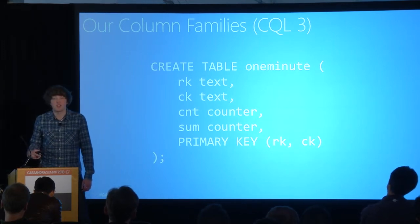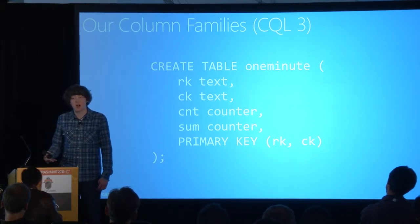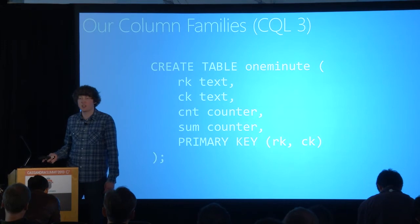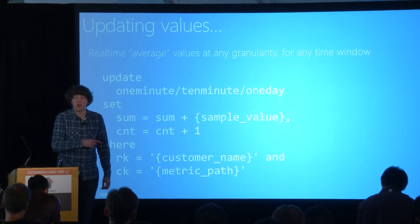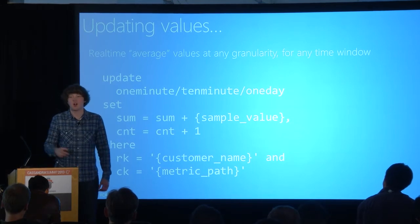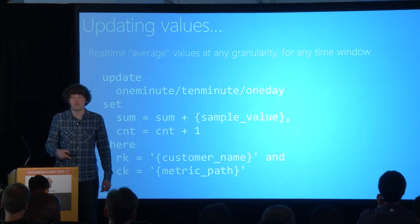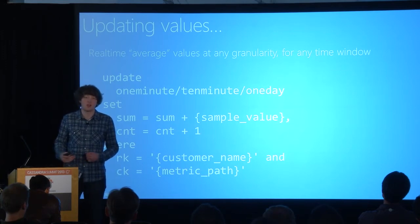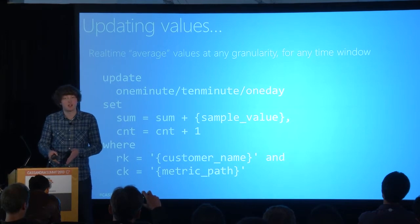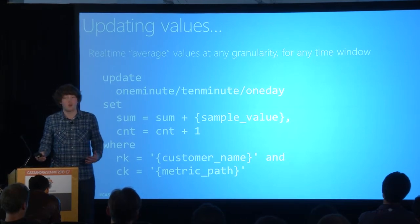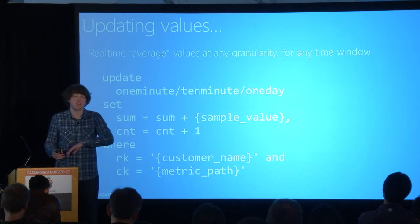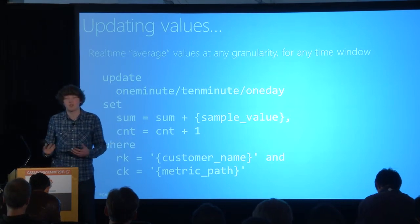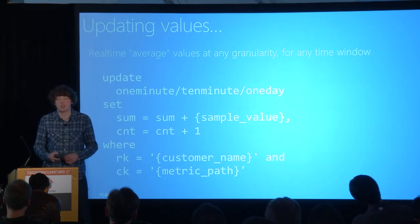All of this data is written using the distributed counters that Cassandra provides out of the box, such that all of our aggregates and views are in real time. We just increment these counter values based on the samples, so we're always able to see, for the one-minute view of machines in US West, what's the CPU, or the one-day view for machines' network latency by US East. All of that data is immediately available at whatever granularity you want. We're talking tens of milliseconds to fetch this data back — under 100 data points — and it's a single round trip to the Cassandra cluster.